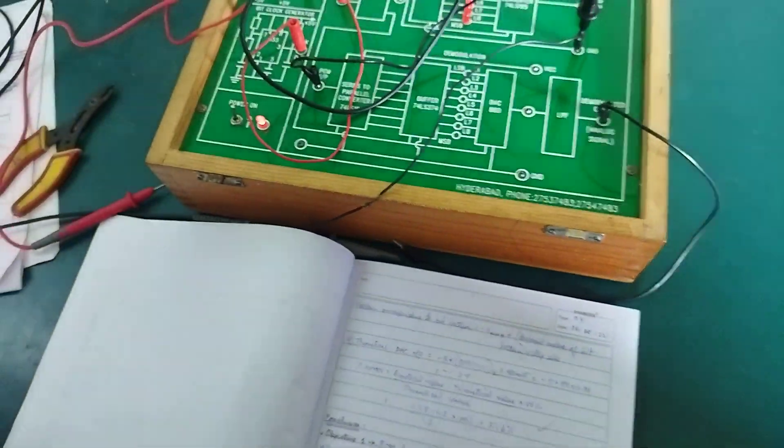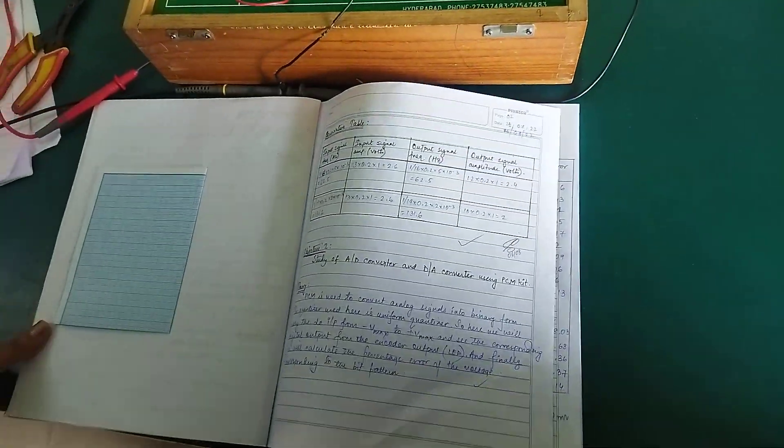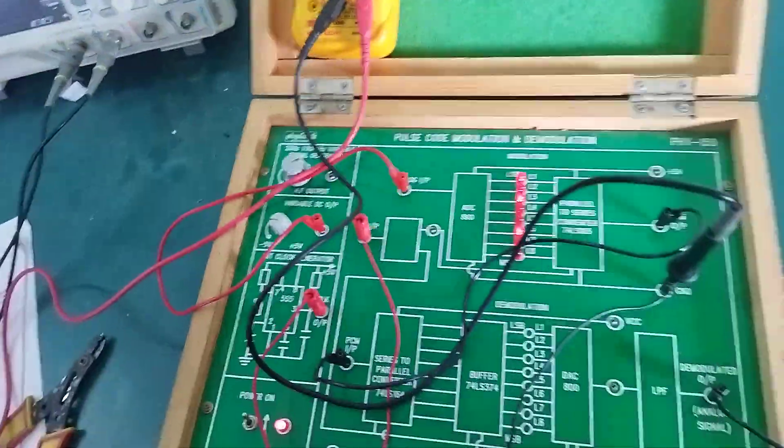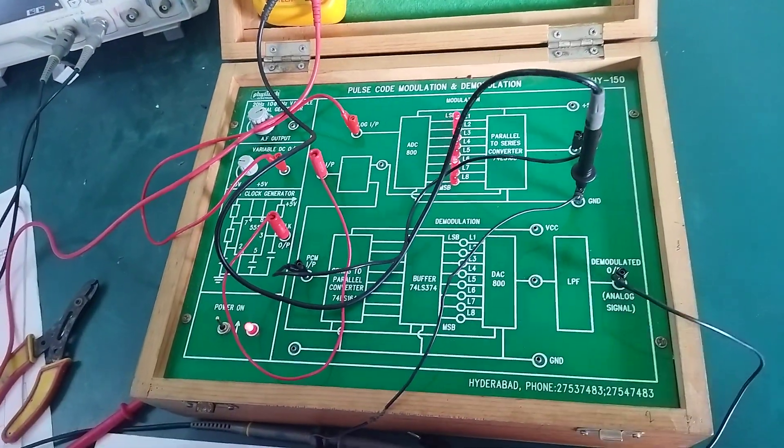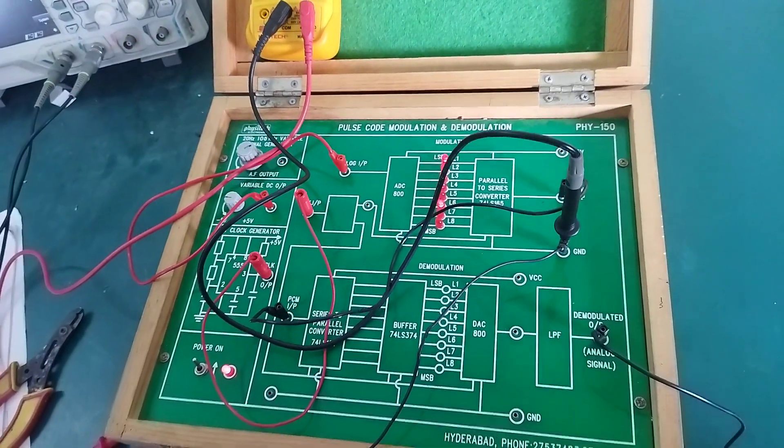So this is how we study the ADC and DAC using PCM kit. This is the first part of transmission reception. This kit is almost the same. This is the variable DC. This is the input. Thank you.